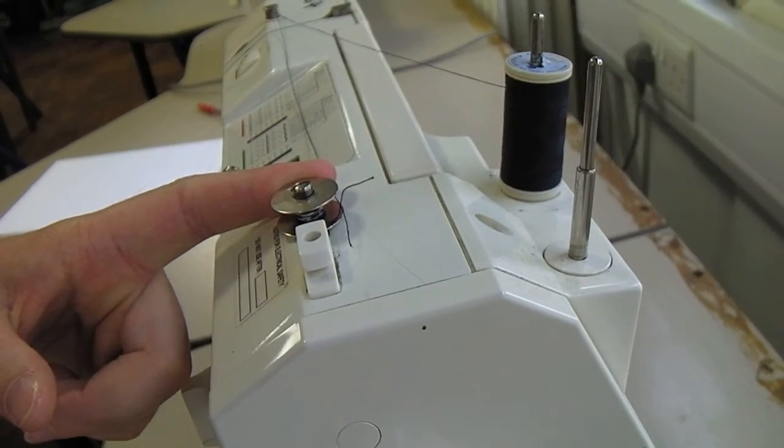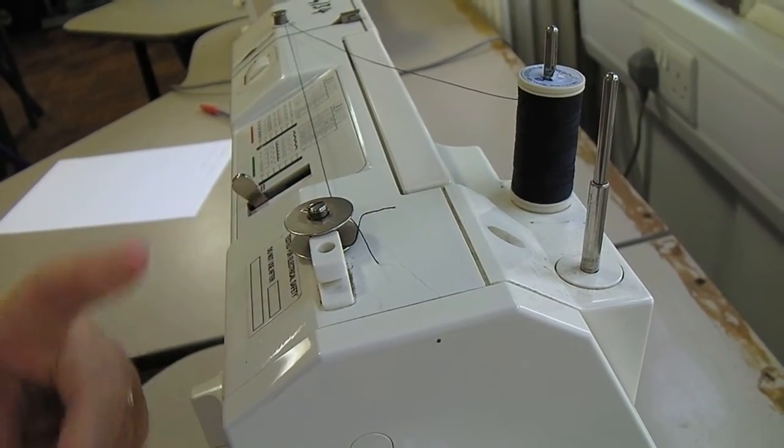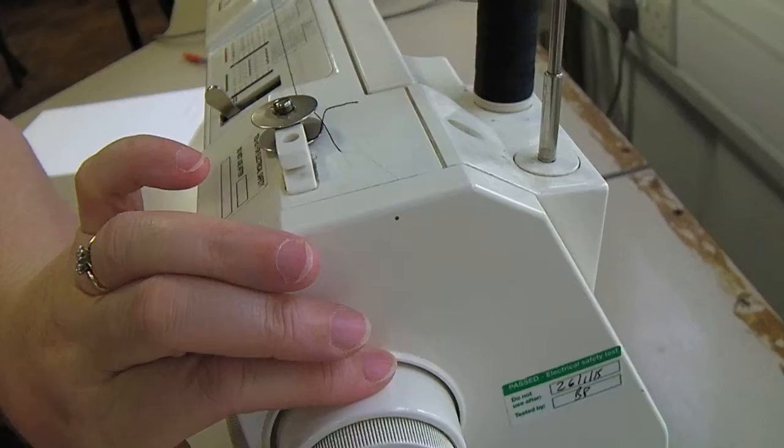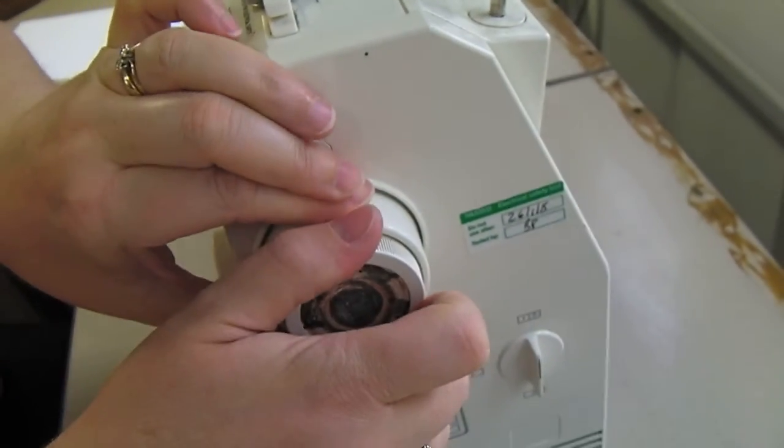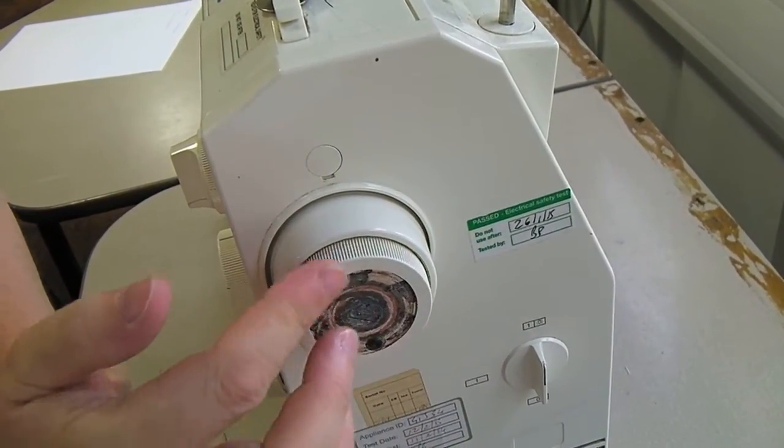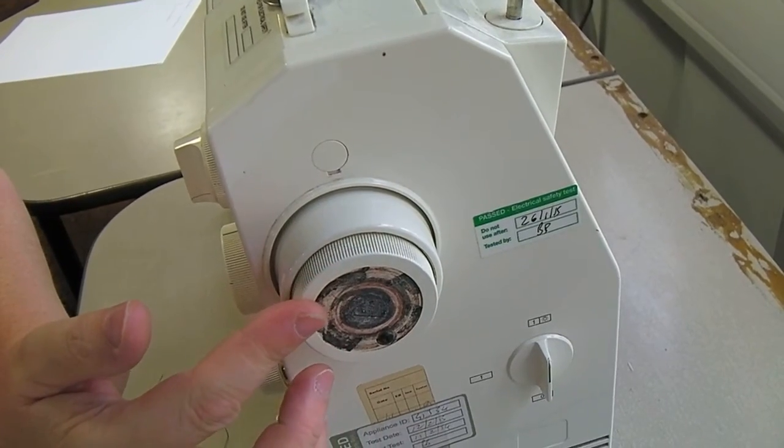Push your bobbin across till it clicks. Then take hold of your hand wheel and undo the middle of the hand wheel until it's loose. This disconnects the needle from the machine.